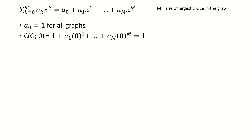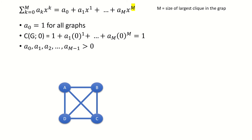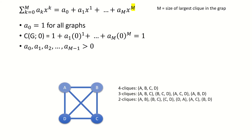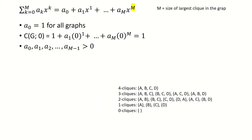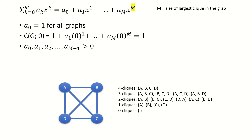The second property is that if a clique polynomial is of degree m, meaning its highest power term is some constant times x to the m power, then the coefficients on all lower degree terms must be non-zero. That is, a sub 0 through a sub m minus 1 are all non-zero. This follows from the fact that if there are any m-cliques in the graph, there must be cliques of all sizes lower than m as well. For example, suppose we have some graph g whose largest clique is a 4-clique, meaning that the graph shown here is a subgraph of g. Then within this 4-clique subgraph, we can find 3-cliques, 2-cliques, 1-cliques, and the 0-clique, meaning that g contains 3, 2, 1, and 0 cliques also.